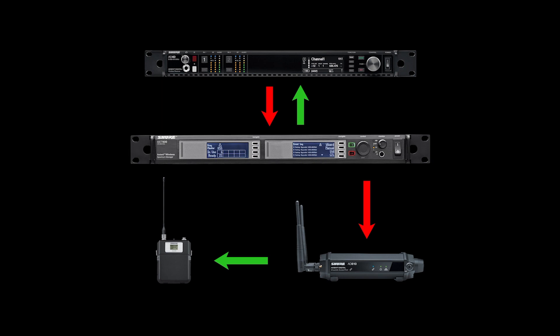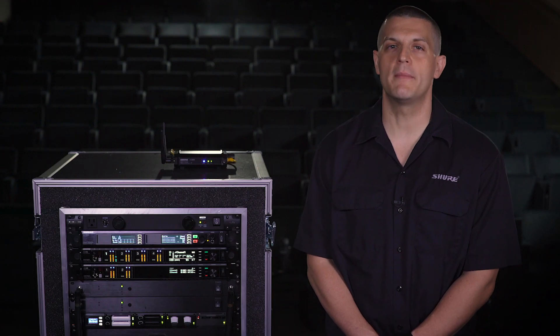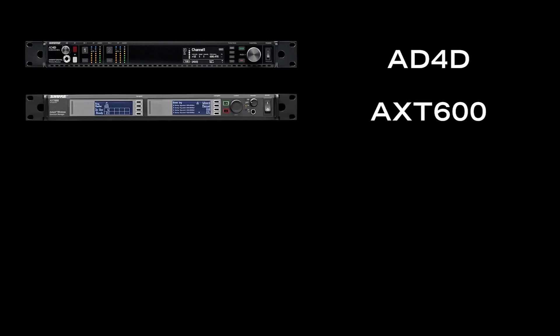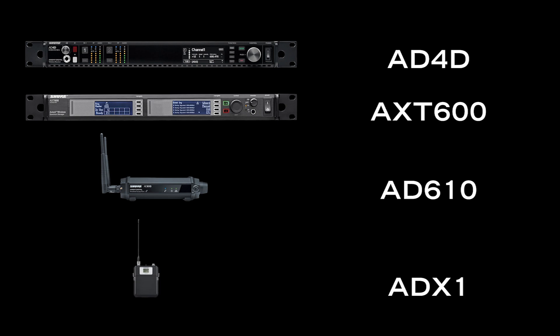Frequency deployment happens within milliseconds before interference becomes audible. For this demo, we've built an Axiant Digital system with the following components: AD4D Receiver, AXT600 Spectrum Manager, AD610 Access Point, and an ADX1 Enhanced Body Pack Transmitter with a Lavalier Mic.